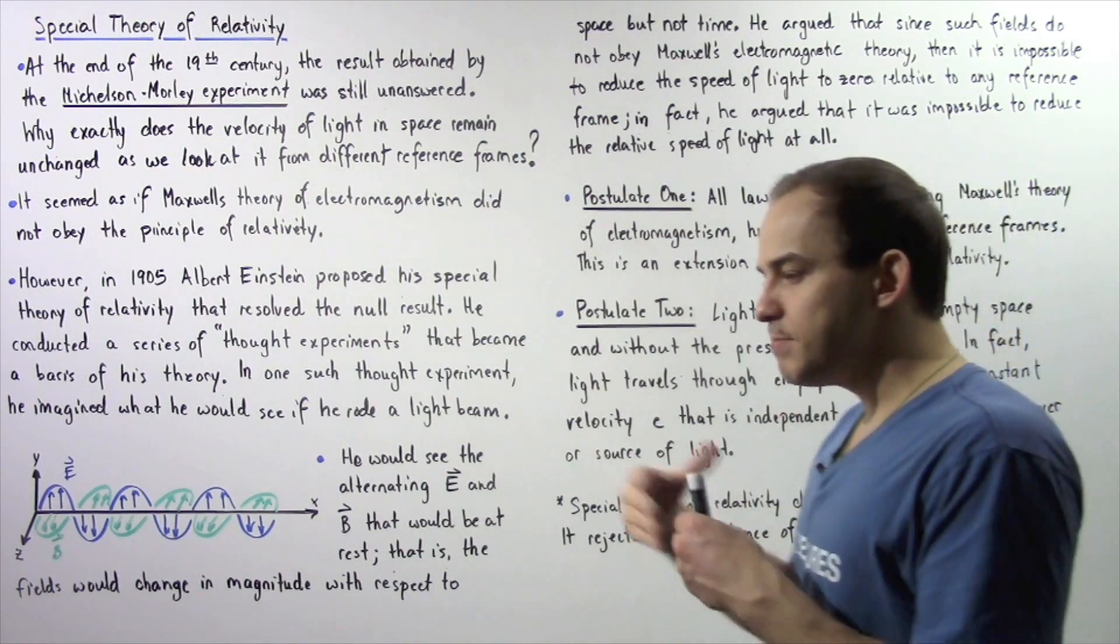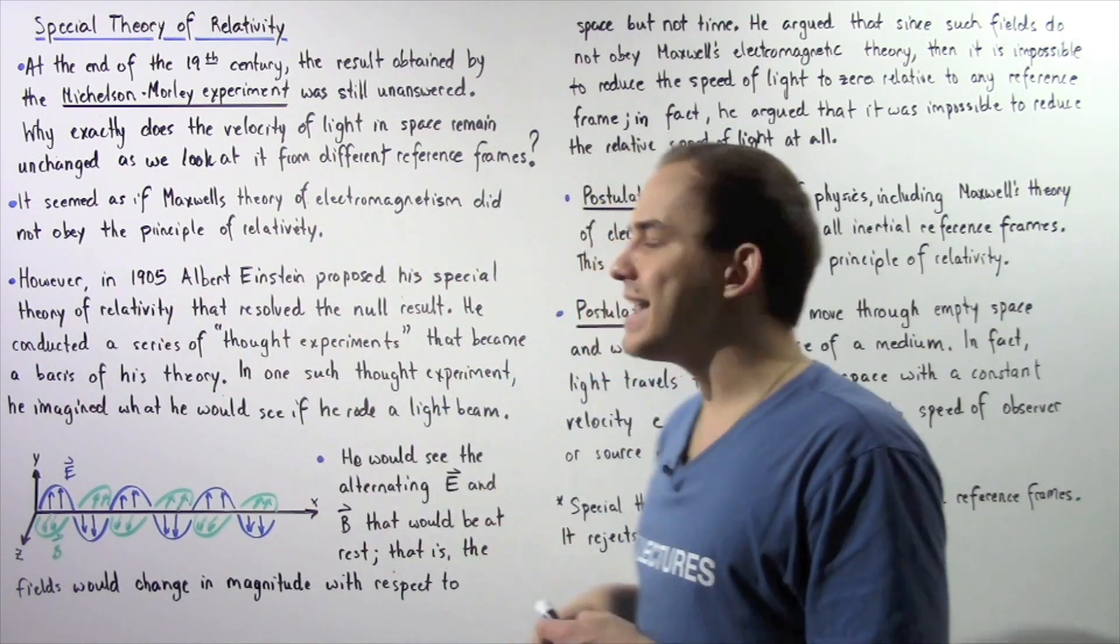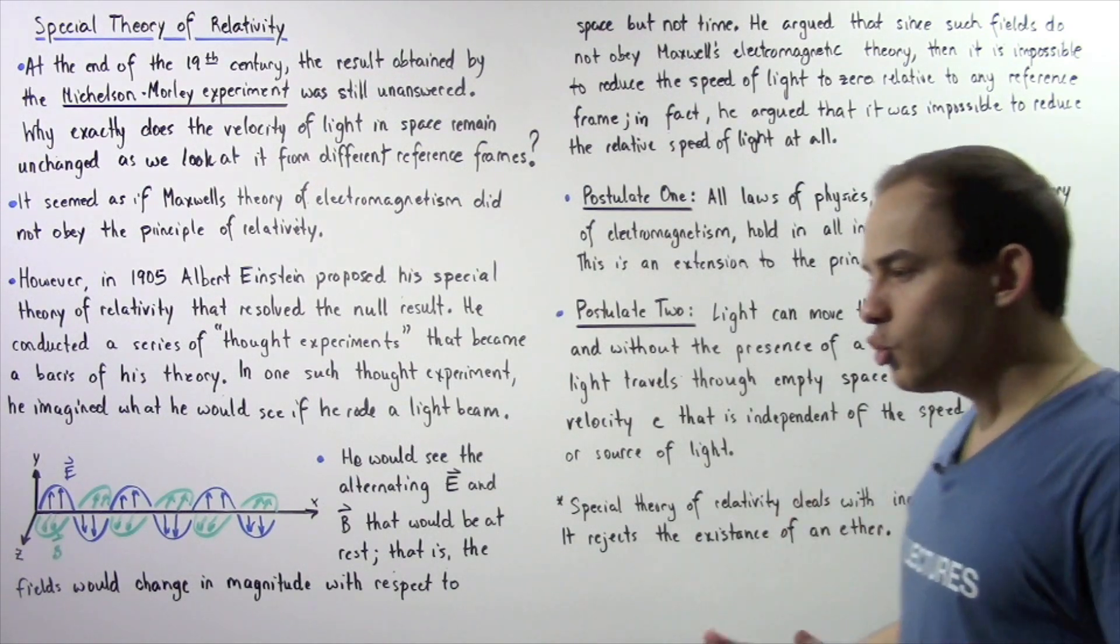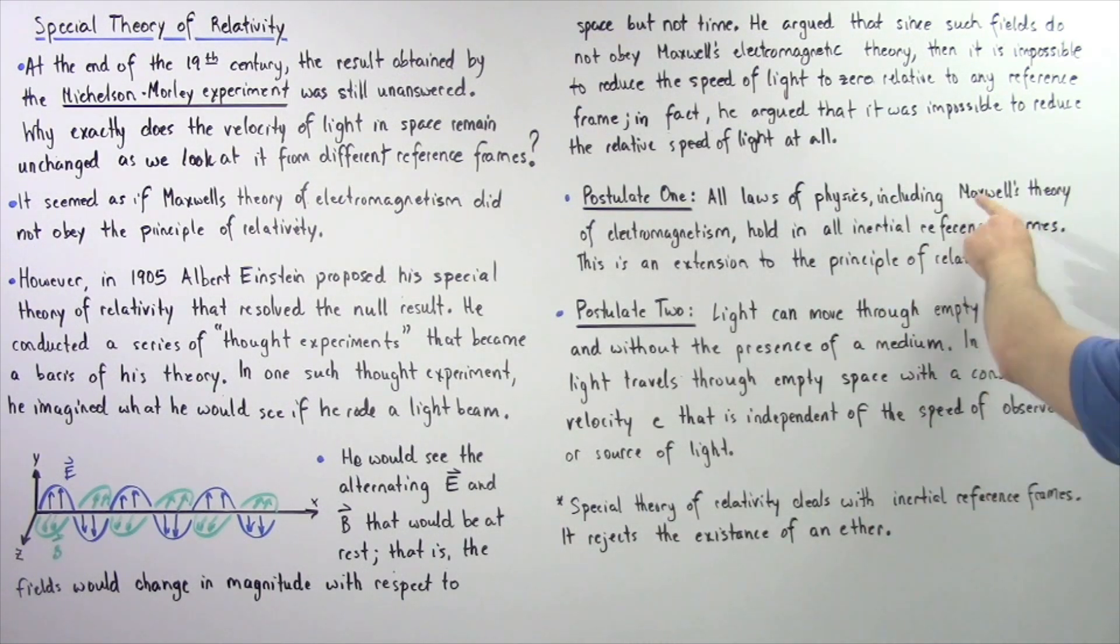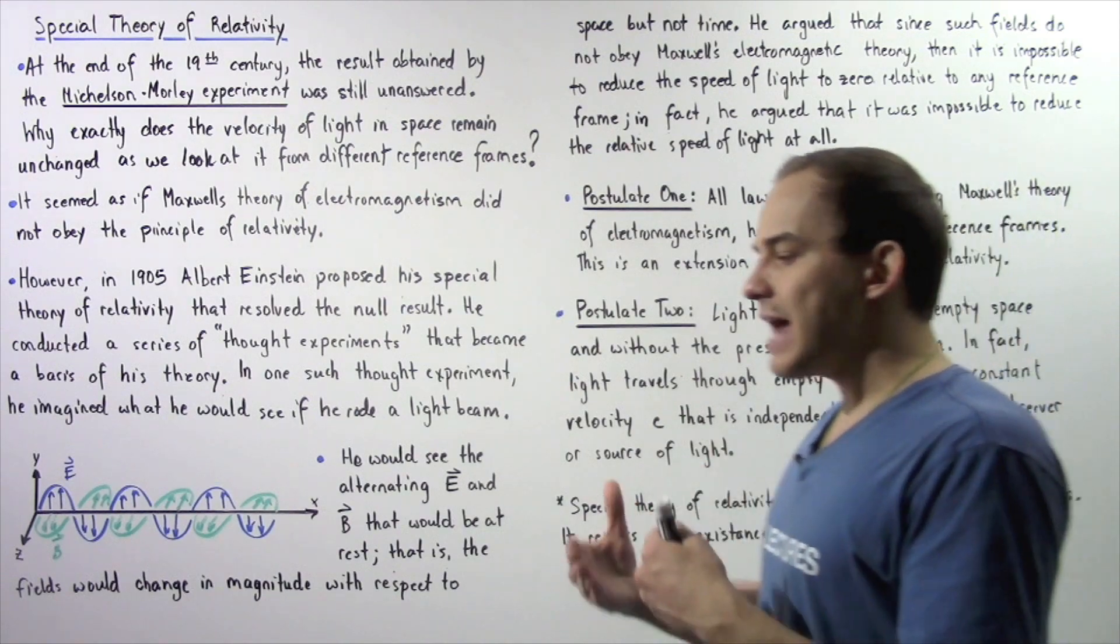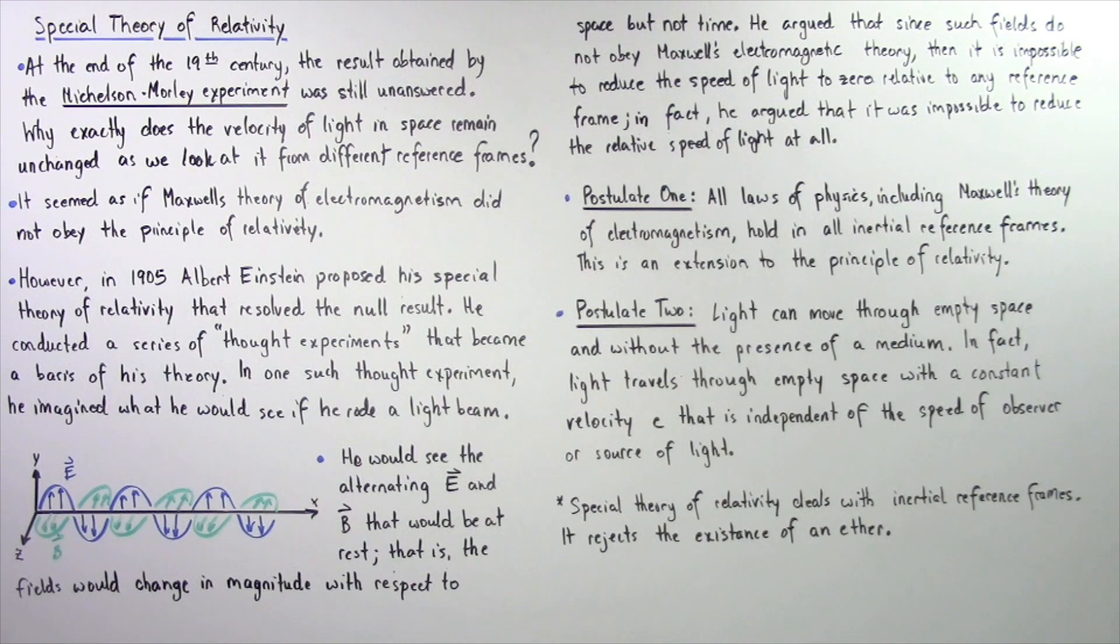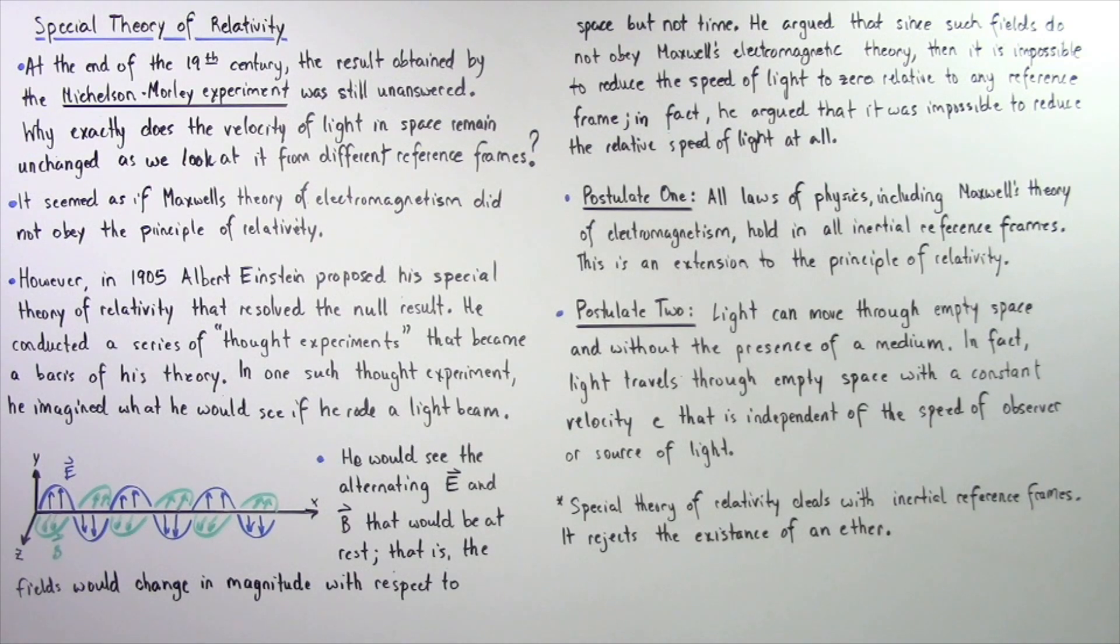Postulate 1 is an extension of the principle of relativity as discussed by Newton and Galileo. Postulate 1 states the following: All laws of physics, and this includes Newton's laws of motion and the law of universal gravitation as well as Maxwell's theory of electromagnetism, hold in all inertial reference frames. In all reference frames that are either stationary or moving with a constant velocity. Once again, this is an extension to the principle of relativity.